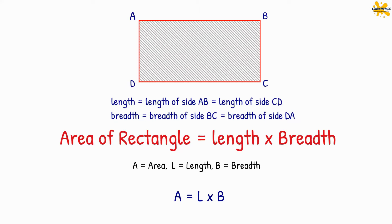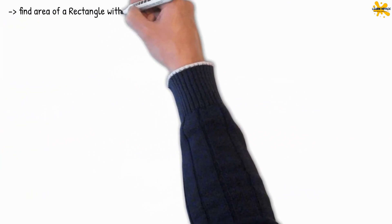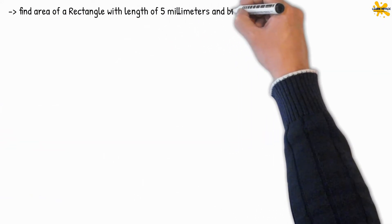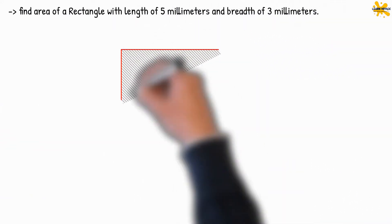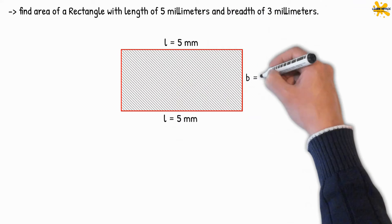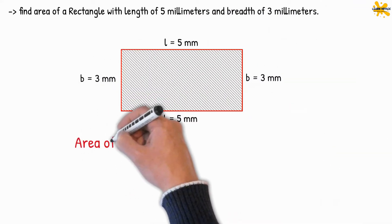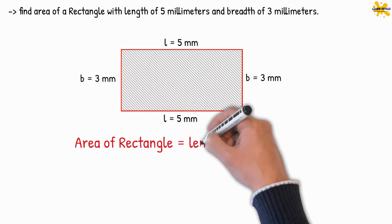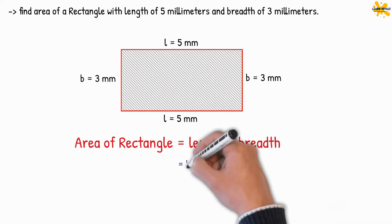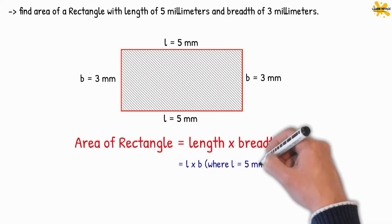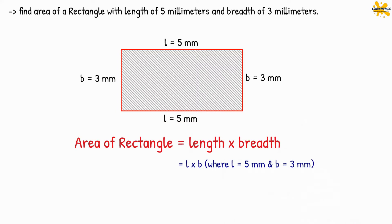Let me show you an example. Let's find an area of a rectangle with a length of 5 mm and a breadth of 3 mm. As you know the area of the rectangle is equal to length into breadth. Here the length L is 5 mm and breadth B is 3 mm.